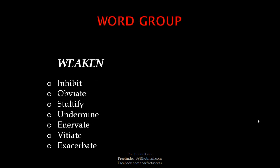The next word group is for weaken. Words you can use to mean weaken something: inhibit, obviate, stultify, undermine, enervate, vitiate, and exacerbate. Some words like obviate have come under more than one word group because they have meanings not exactly the same as the word group, but you can still form an idea of the word — otherwise it would be very difficult to learn the exact meanings of all these words, and that is the purpose that word groups serve.